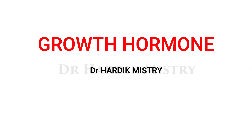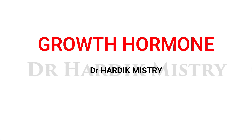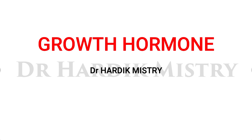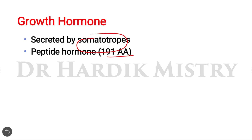In this video we are going through the anterior pituitary hormone growth hormone. It is secreted by somatotropes, which are the cells of the anterior pituitary gland. It is a peptide hormone having 191 amino acids.